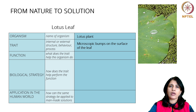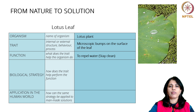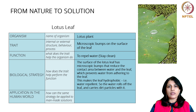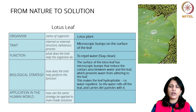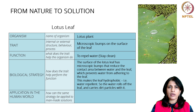The function of these bumps on the leaf is to repel water, or you could also say to stay clean. The strategy the lotus leaf employs is that the microscopic bumps reduce the contact area between water and the leaf, therefore repelling water, causing it to roll off, and washing away dust and dirt along with it. That is the biological strategy the lotus leaf uses in order to stay clean. This is the principle or strategy you observe as part of the nature to solution approach.